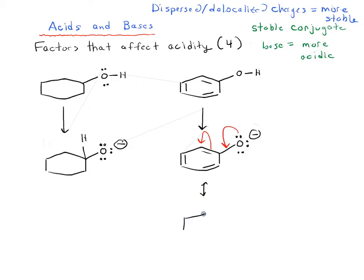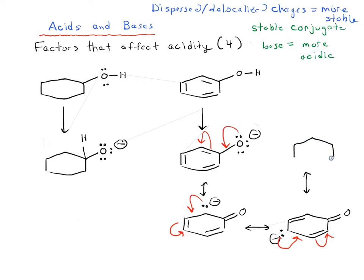We could draw a resonance form for this molecule that looks like this, with the negative charge on this carbon. We can keep going - we can move this negative charge around the ring considerably, putting it on this carbon and then on this carbon. There are a lot of different resonance forms available for this anion on the right.